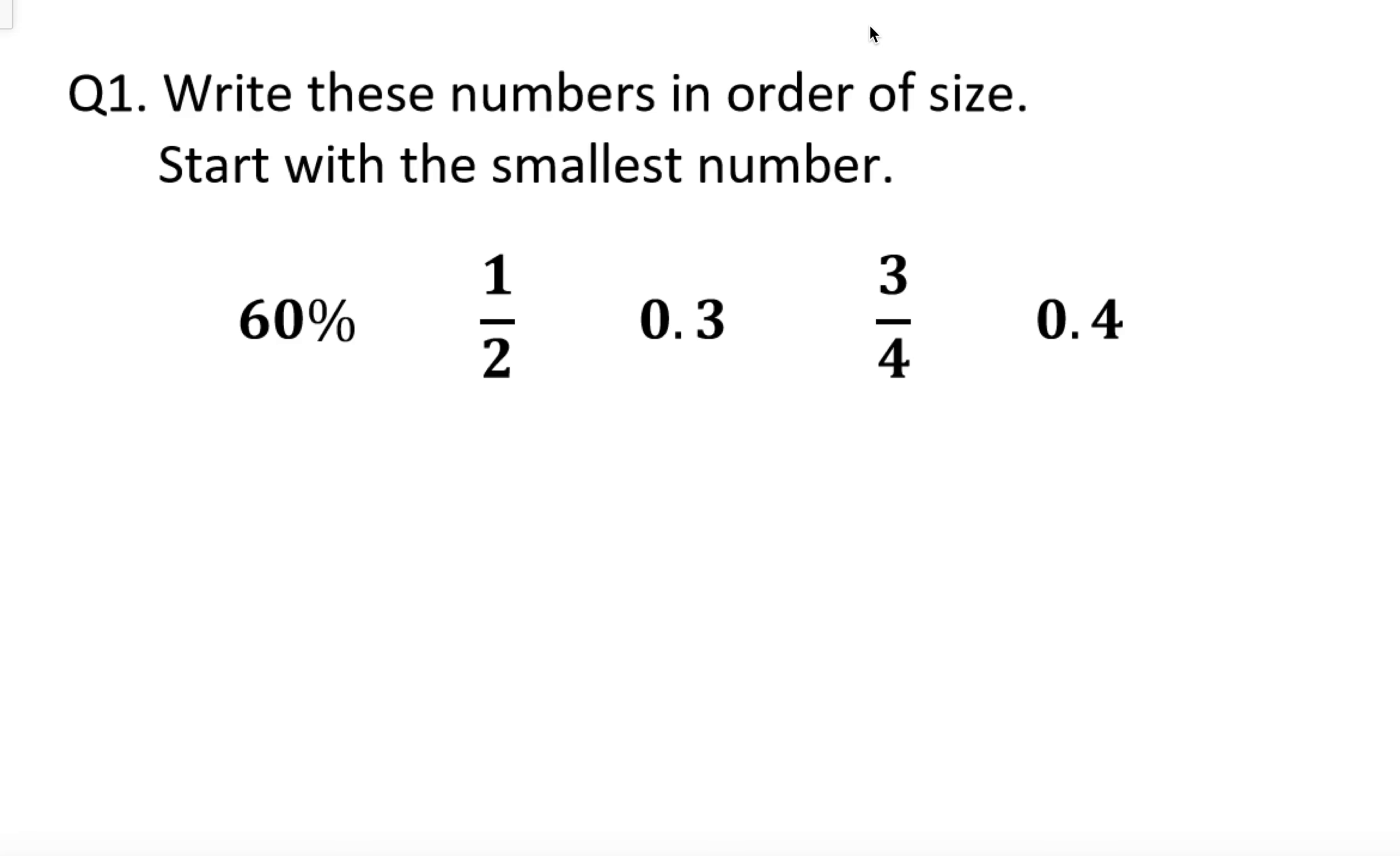Now to put these in order of size is going to be difficult because they're all in different formats like percentage, decimal and fraction. So the first thing we've got to do is get them all into the same format and the best choice really is to go for decimals. So two of them are already in decimals which is 0.3 and 0.4 so we've only got to do three others.